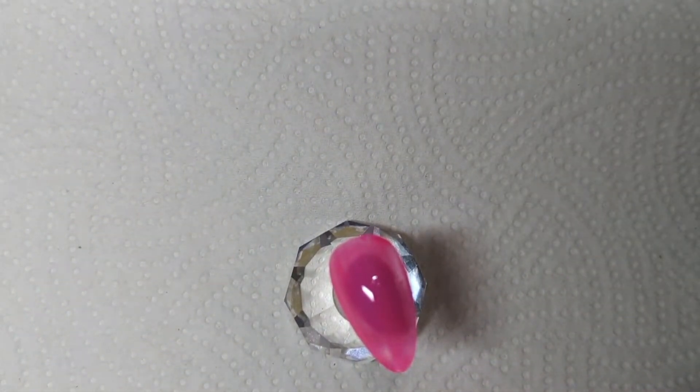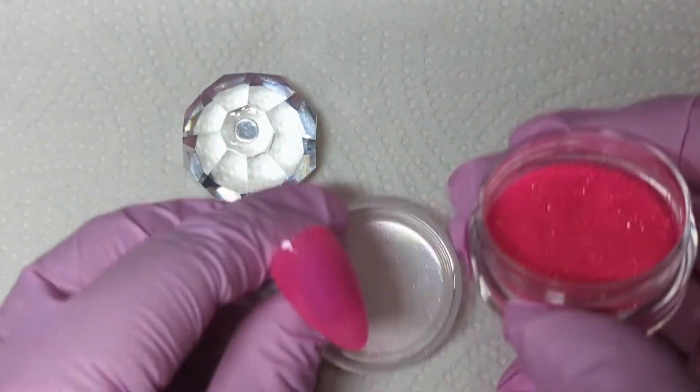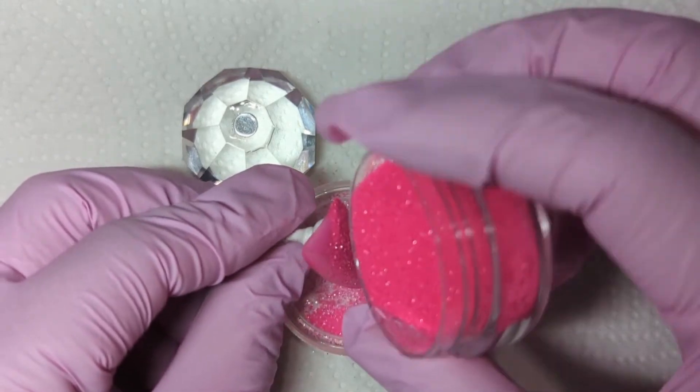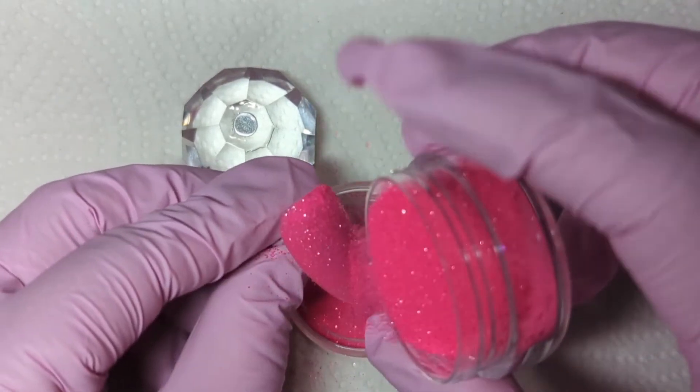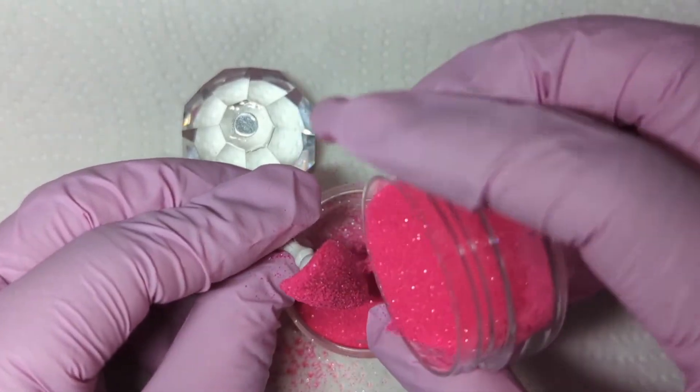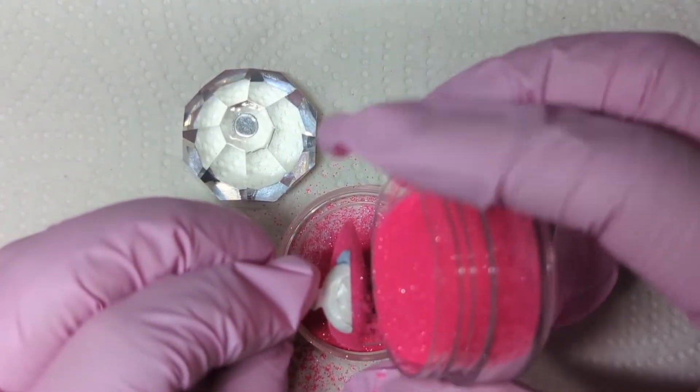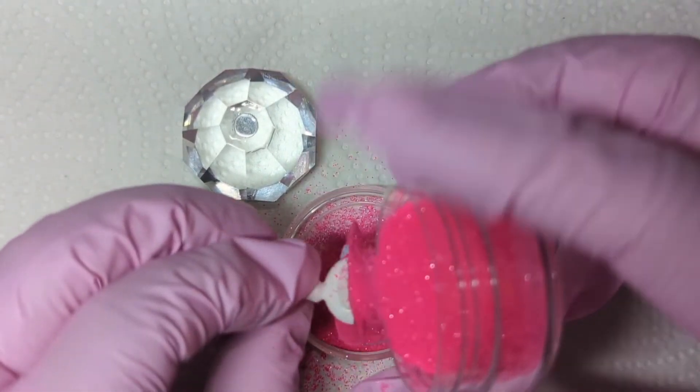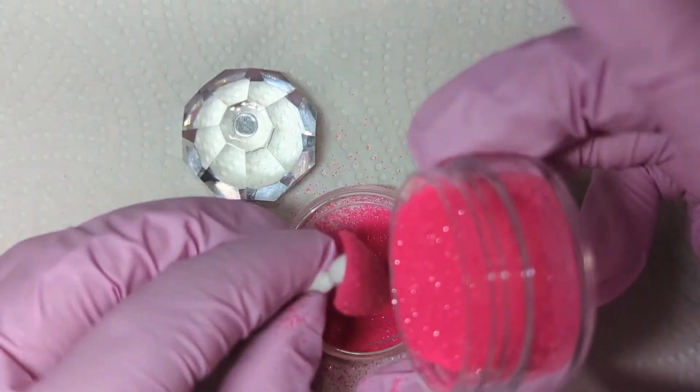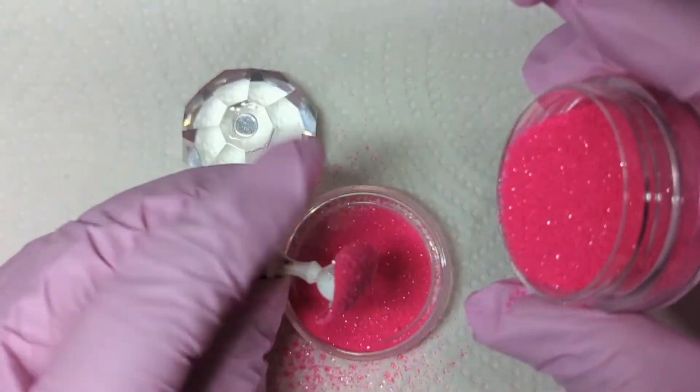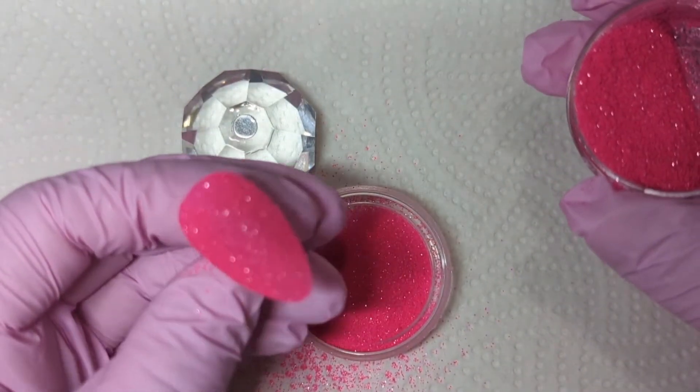Now I'm going in with the top coat and before I cure it I'm gonna sprinkle on some very fine neon pink glitter. I only do one coat of color because it's getting covered with glitter, so the color's just there in case there's any gaps. What I like to do when I'm sugaring is make sure the top coat is absorbing the glitter.